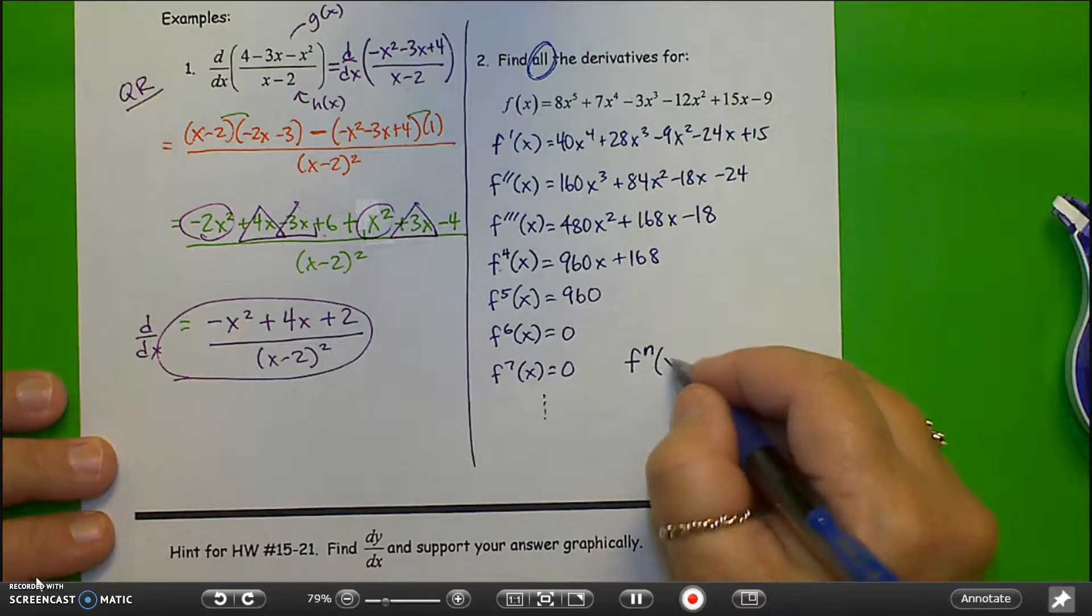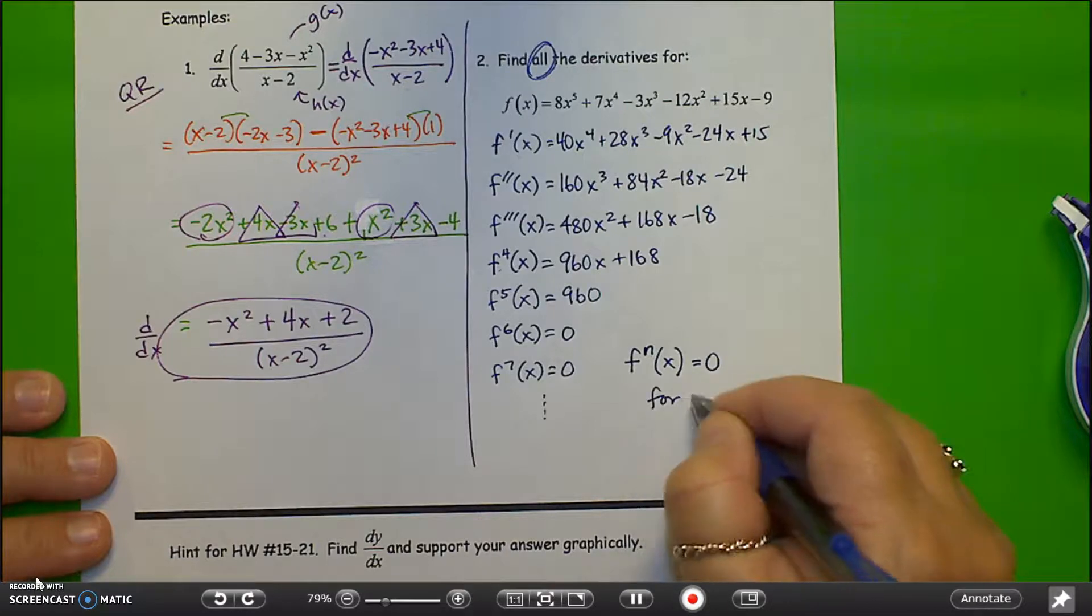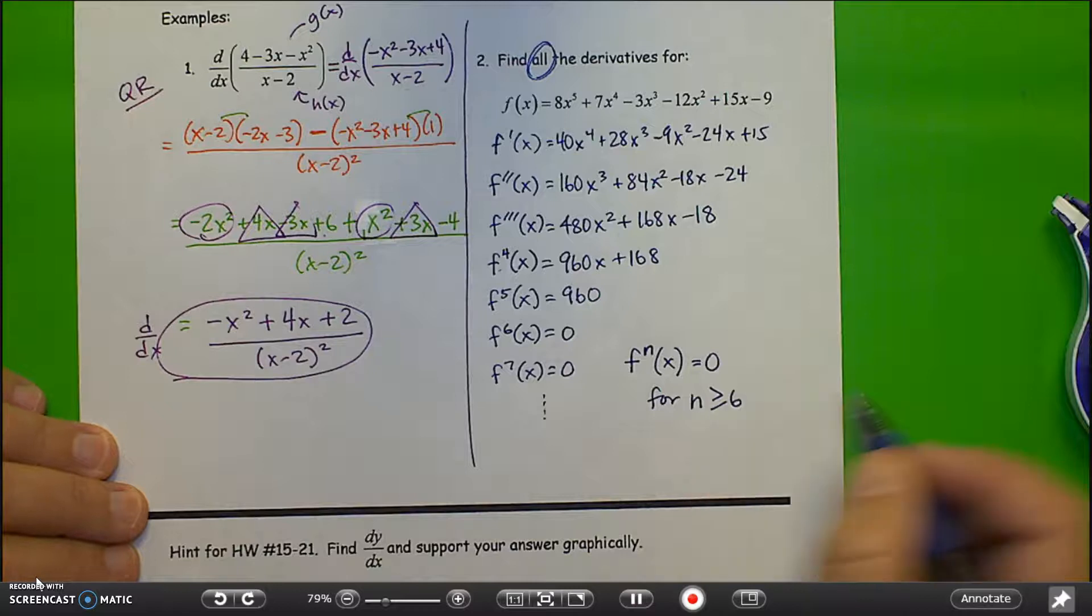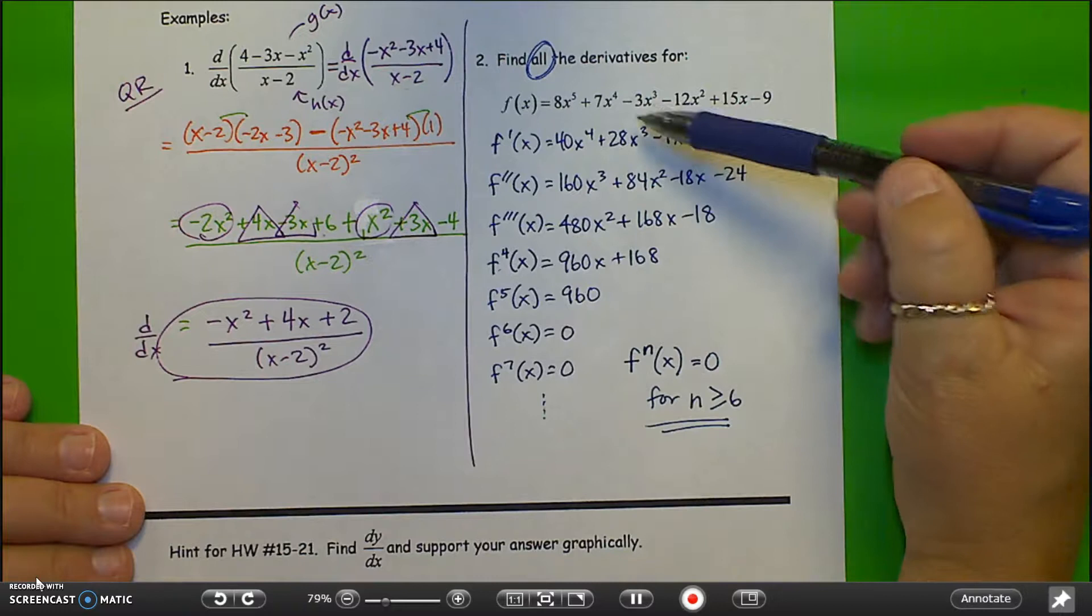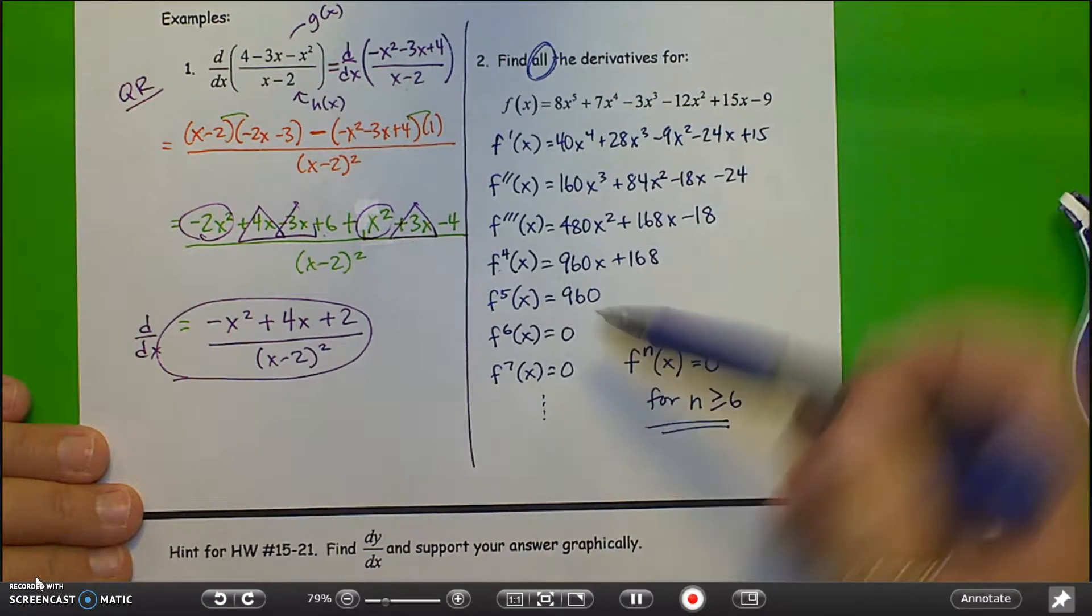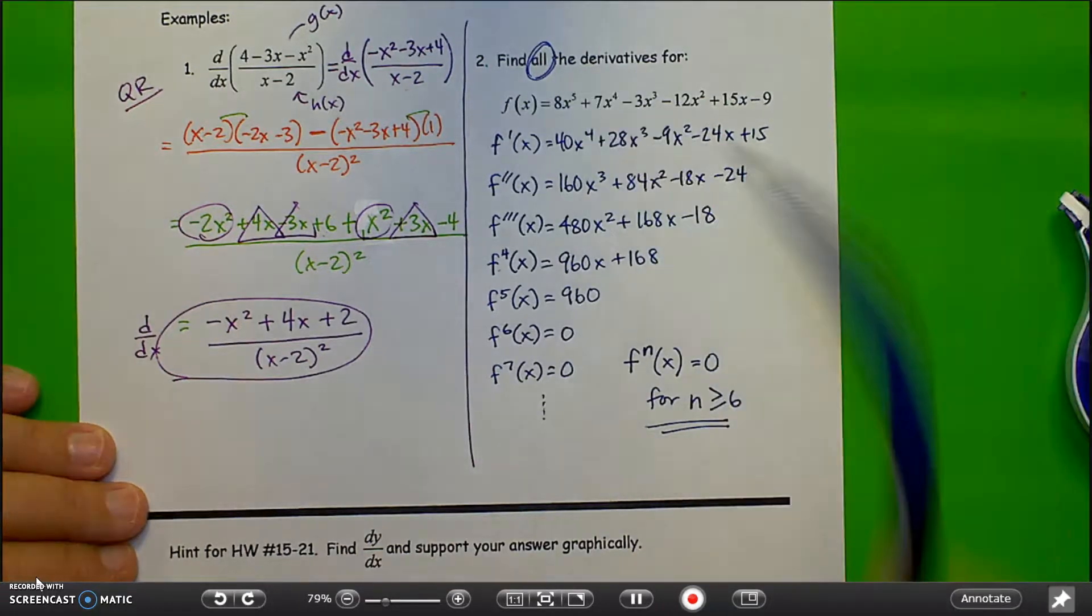f to the nth derivative of the function is equal to 0 for n is, let's see, it starts at 6, greater than or equal to 6. This is an essential part of the answer. All of these derivatives with polynomial pieces left over, all the way down until you get to 0s, and then finish the problem off with this. That truly defines all of the derivatives.